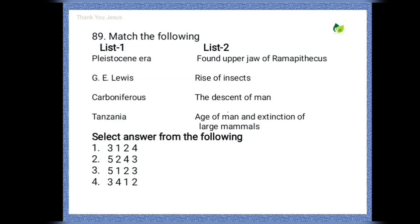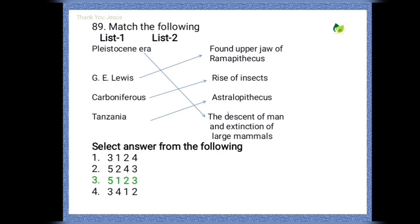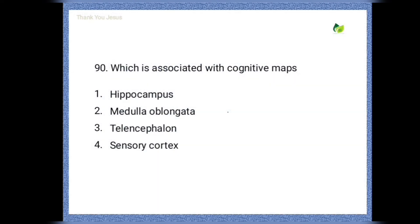Next question: match the following — Pleistocene, geological periods, Carboniferous, Tanzania. The correct answer for the brain region matching is: hippocampus, medulla oblongata, telencephalon, sensory cortex. The correct option highlighted is hippocampus.